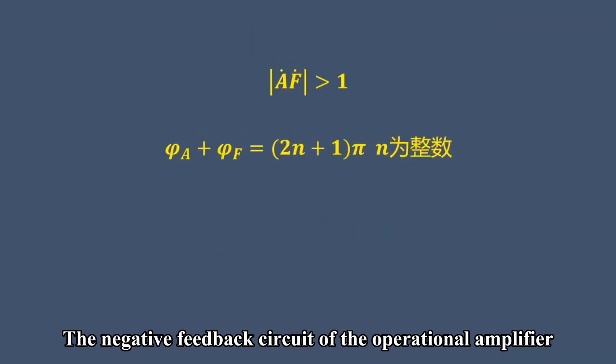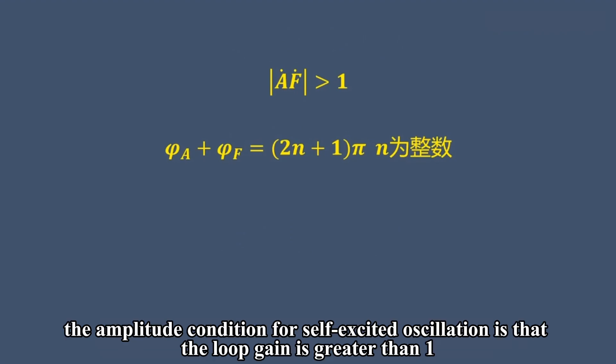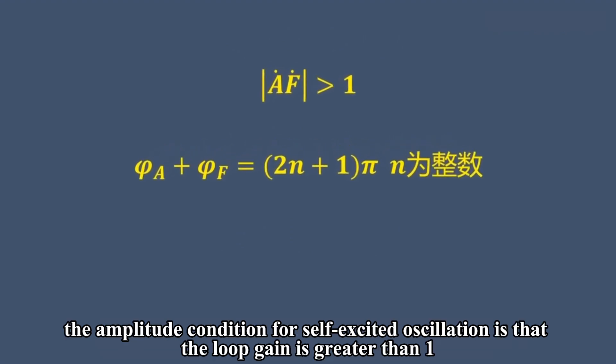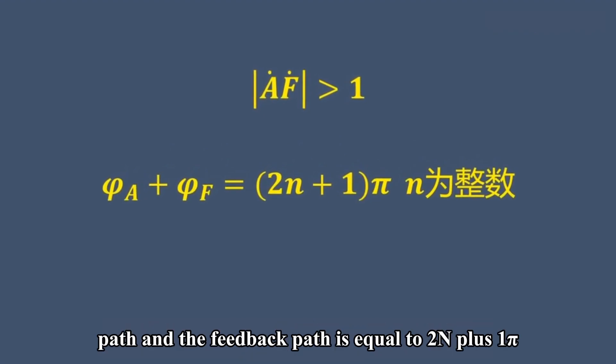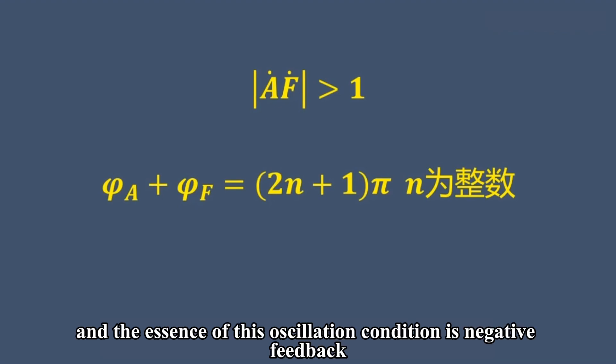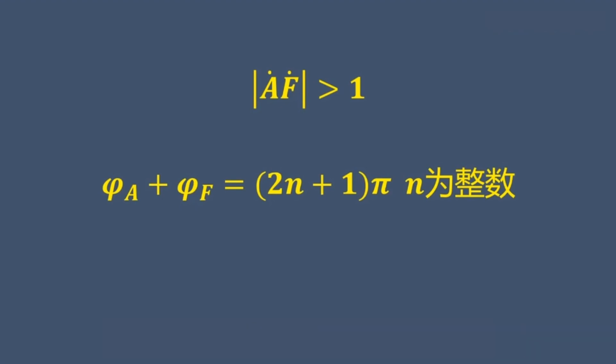The negative feedback circuit of the operational amplifier, the amplitude condition for self-excited oscillation is that the loop gain is greater than 1. The phase condition is that the phase sum of the amplification path and the feedback path equals (2n+1)π, where n is an integer. The essence of this oscillation condition is negative feedback that, due to some reasons, becomes positive feedback.